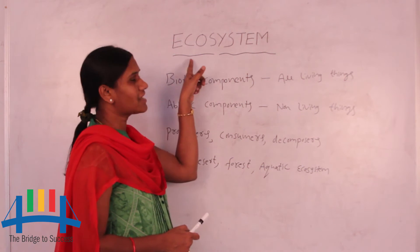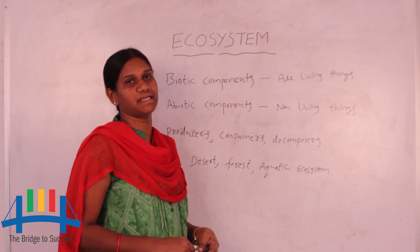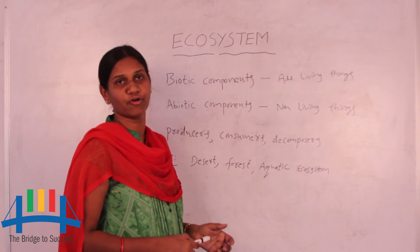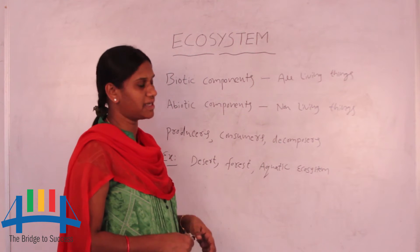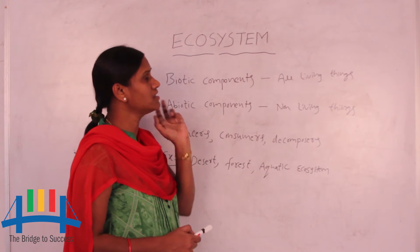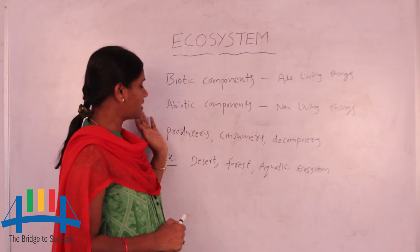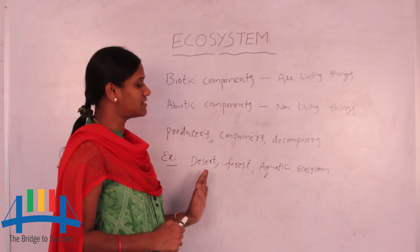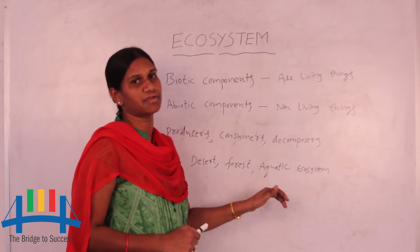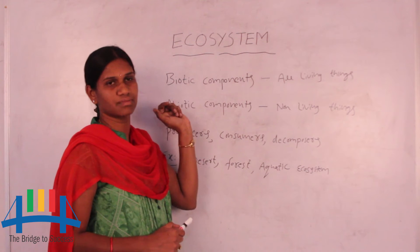Actually, ecosystem means the living place — like a habitat — that is a formation of habitat. Different habitats together form an ecosystem. So here, a desert, forest, and aquatic are some of the examples of ecosystems.